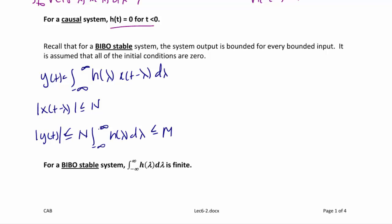We know the only way for this to happen, since N is bounded and M is bounded, is that the integral from negative infinity to positive infinity of the magnitude of h(lambda) d-lambda must be less than infinity. Or, for a BIBO stable system, the integral from negative infinity to positive infinity of |h(lambda)| d-lambda must be finite.